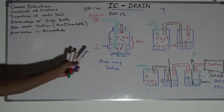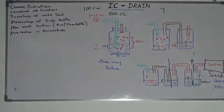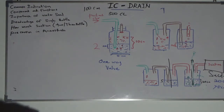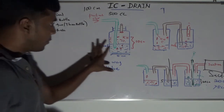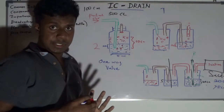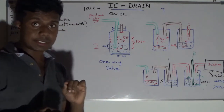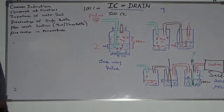So those are the single bottle, two bottle, and three bottle IC drain systems. We will now see what precautions you should take when you are anesthetizing or giving anesthesia to a patient with an IC tube.